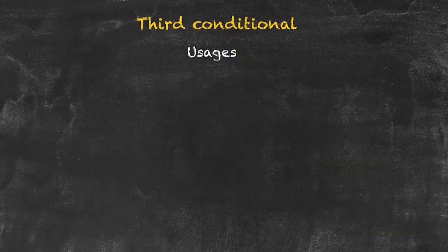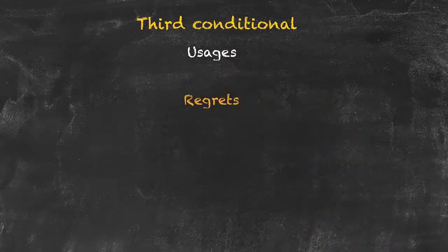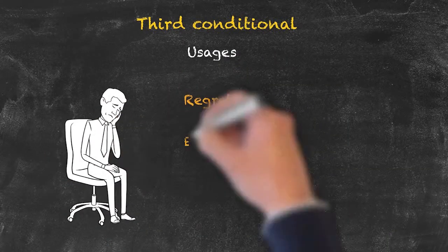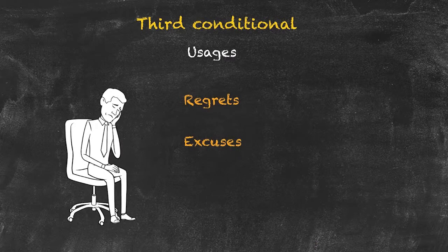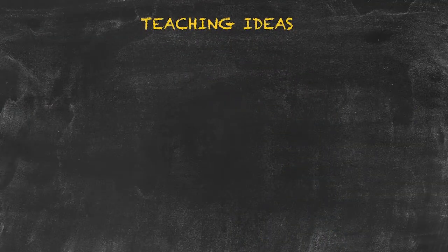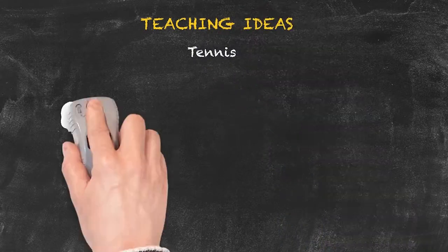Let's have a look at the usages. We're looking at regrets. They're also used for excuses: 'if I'd known it was your birthday, I would have bought you a present.' Let's have a look at a teaching idea that could be used for the third conditional. A nice one — which can also be used for other conditionals — is tennis.